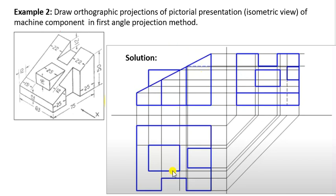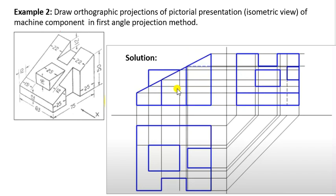Once you get the top view and front view, by projecting lines at 45 degrees and extending the projected lines from the front view and top view, you will get the side view. As this is in first angle projection, we get the left side view on the right side of the front view.